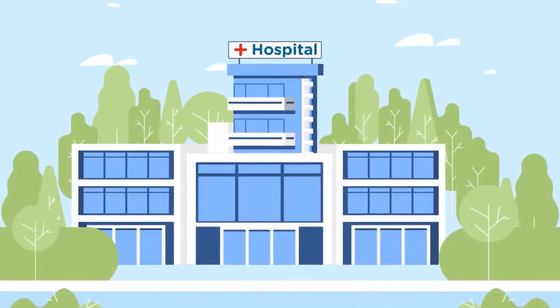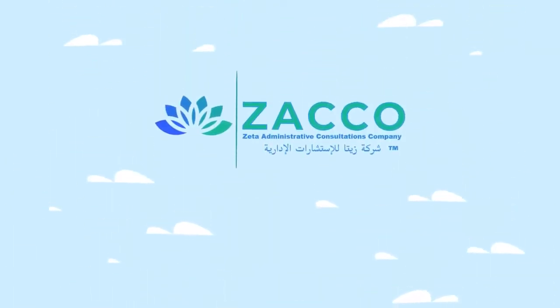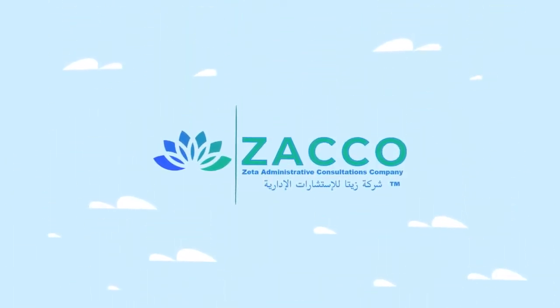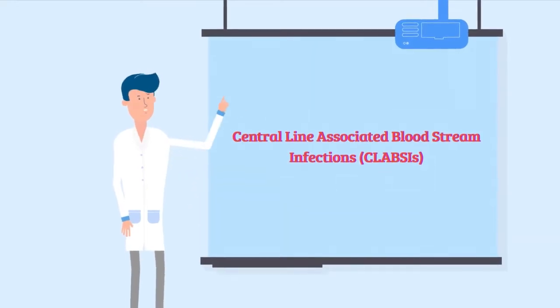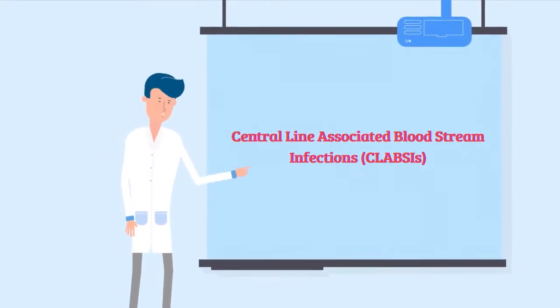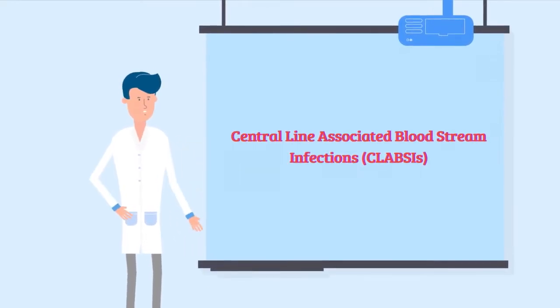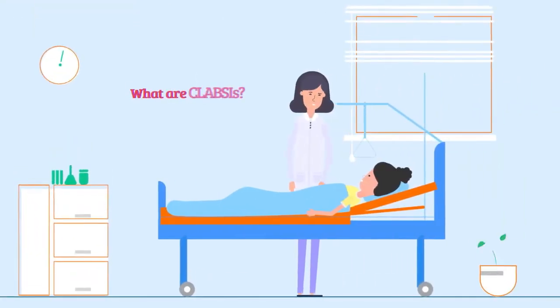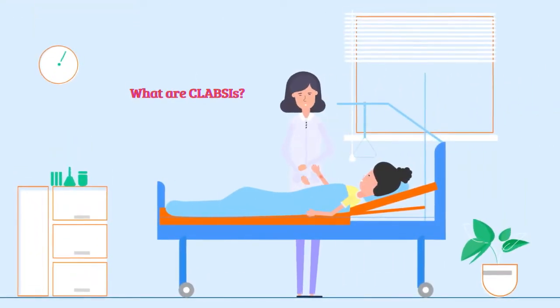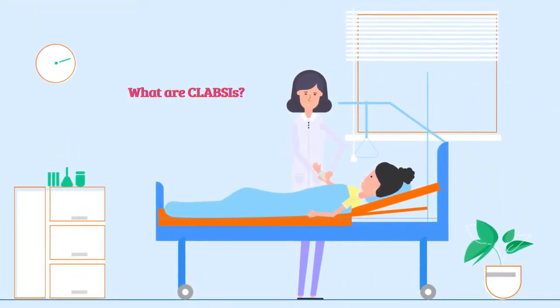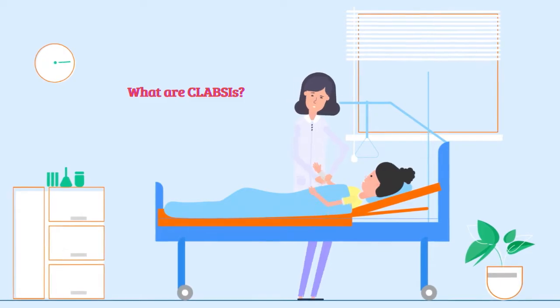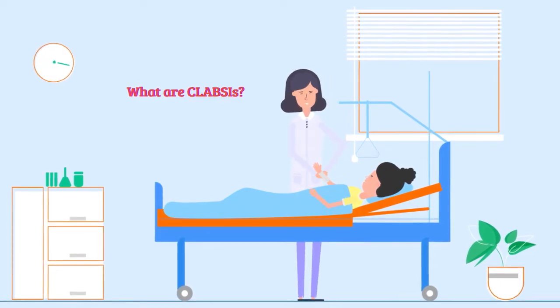Welcome back to ZAKO and our five-part mini-course on HAIs. This video's topic will focus on Central Line Associated Bloodstream Infections, or CLABSIs, which are serious infections that occur in hospitals and healthcare settings.